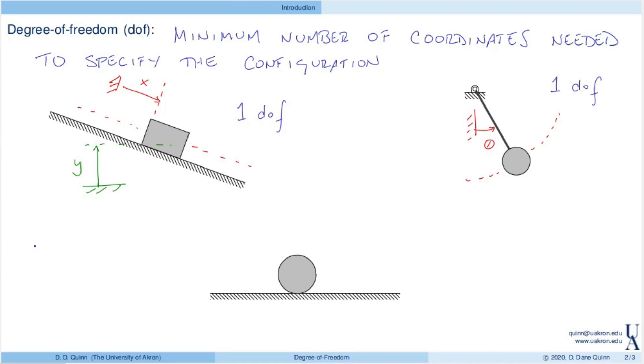The important thing here is that it's the number of independent coordinates. Again as we've seen, particularly in this first example, I could have a number of different coordinates that I chose to measure, but the degree of freedom is the number of independent coordinates that we need to specify the configuration.